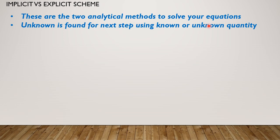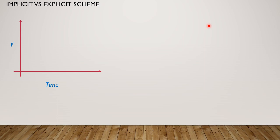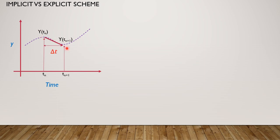To understand this, let us take an example of any function which is varying over time, let's say in this particular fashion. Now we have a known quantity at t equals n. The task is to find out the unknown quantity at t_n+1.